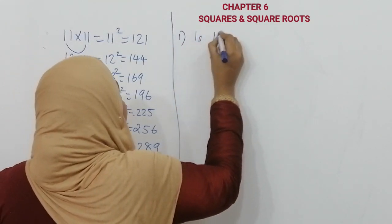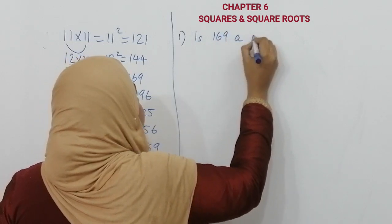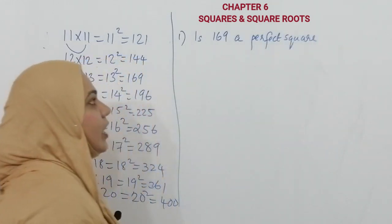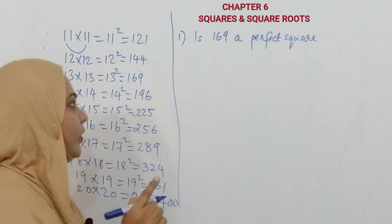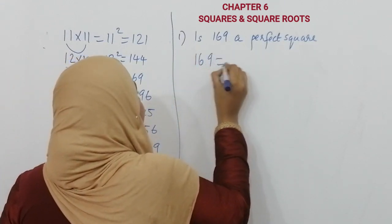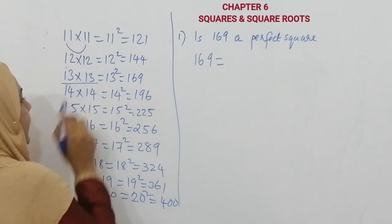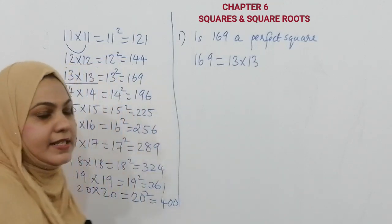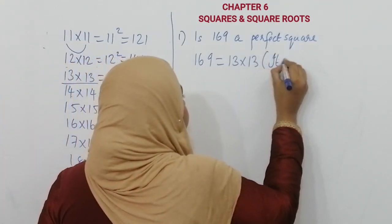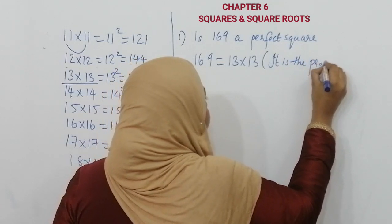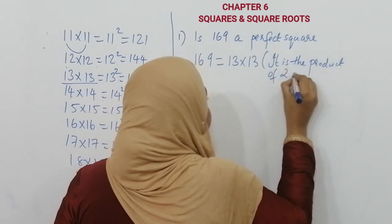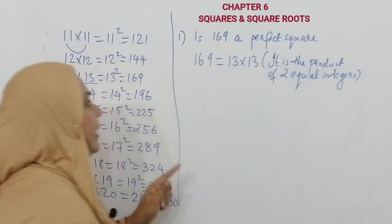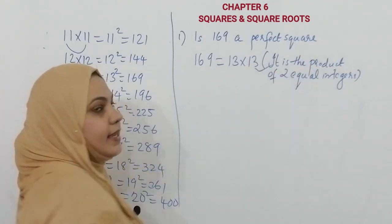So my first question is: is 169 a perfect square? You know that 169 is the product of two equal integers. Which are the two equal integers? 13 multiplied by 13 you will get 169. So it is the product of two equal integers. Therefore, 169 is a perfect square. Our answer is correct.